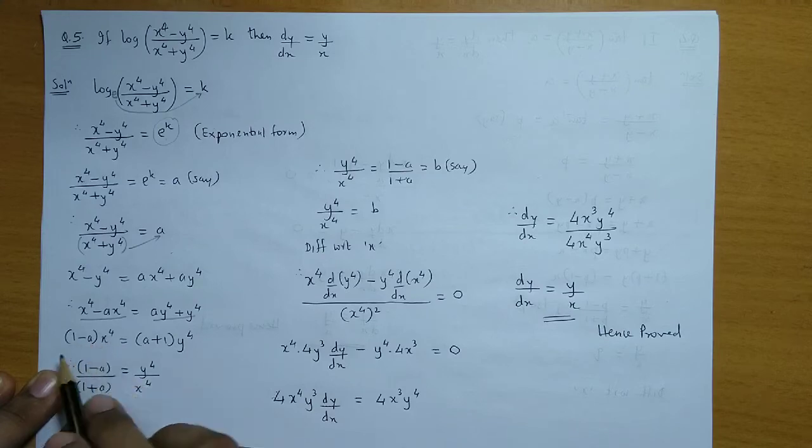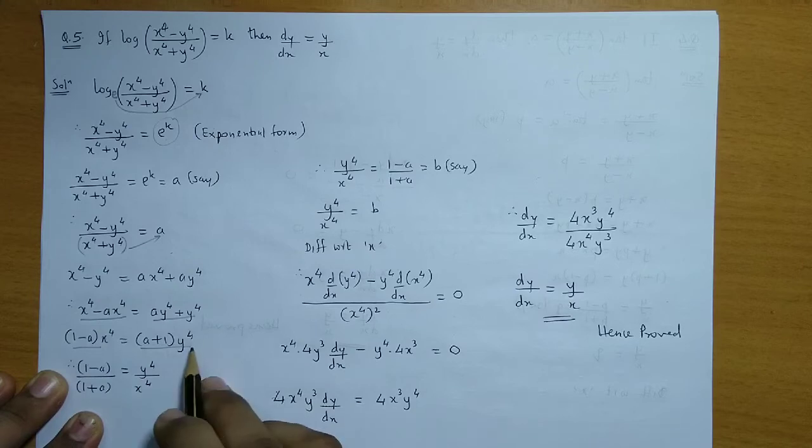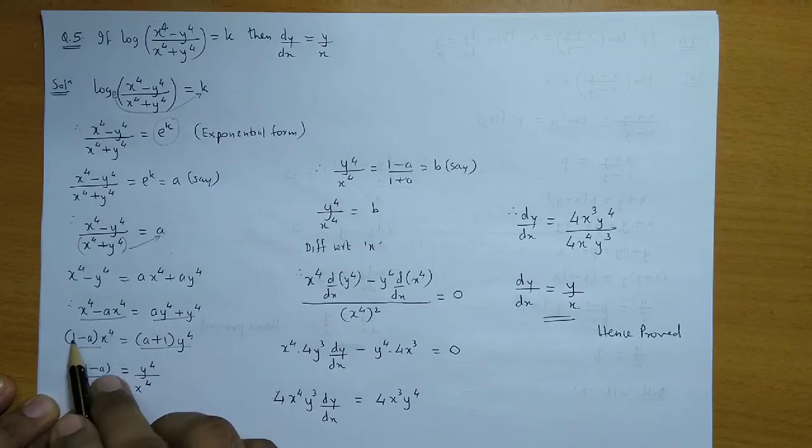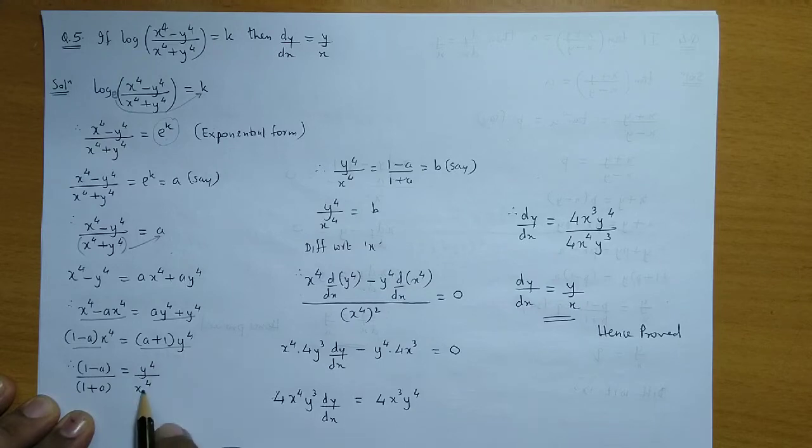Now taking x⁴ common on the left hand side, and taking y⁴ common on the right hand side. Next step is to take the a terms to one side. So you have (1 - a)/(1 + a). And x and y terms to the other side. So on the right hand side comes y⁴/x⁴.